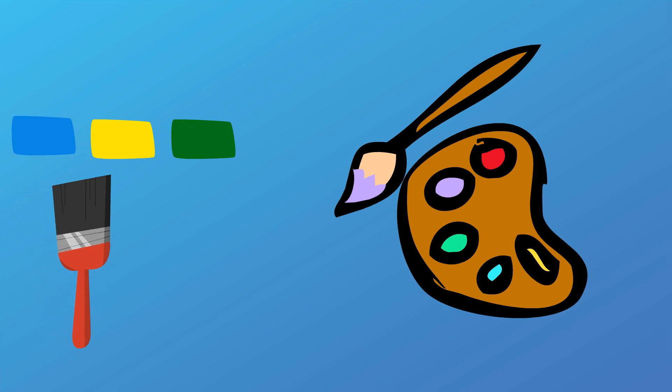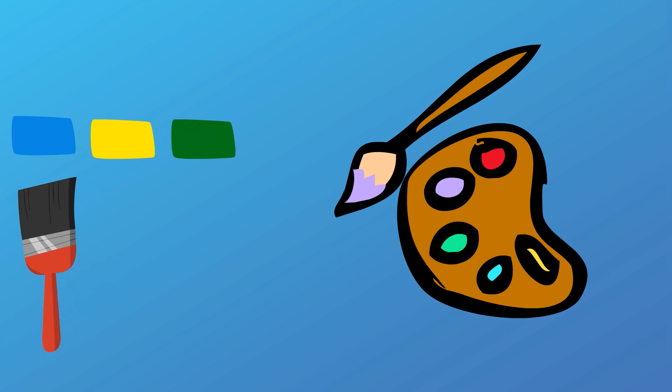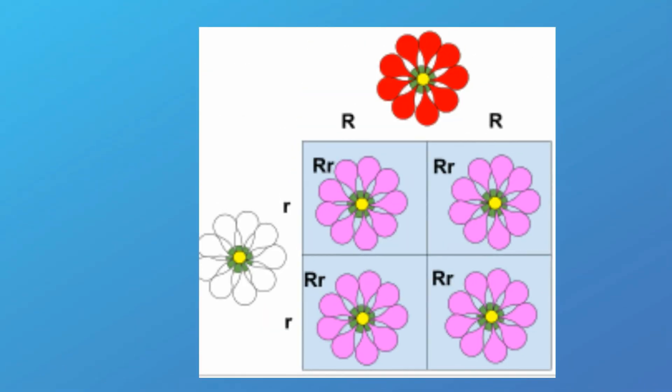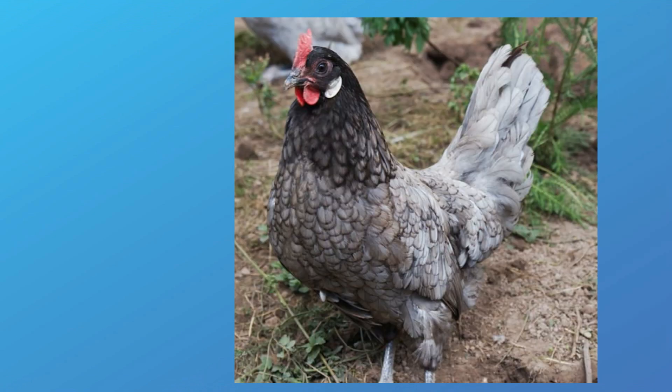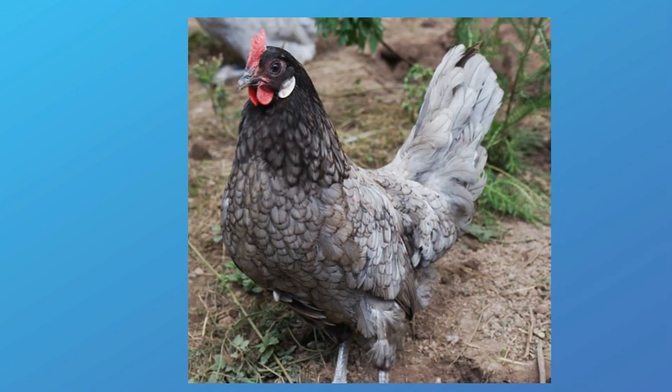Here are some real life examples. The snapdragon is a mix between a white and red flower and you get an in-between color, which is an example of incomplete dominance. This hen is the offspring of a white and black parent and you get an in-between color.